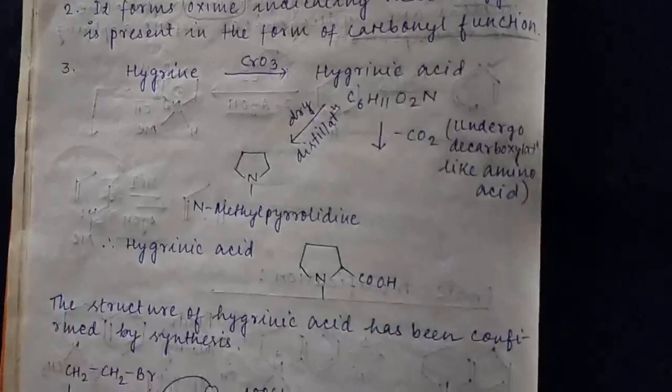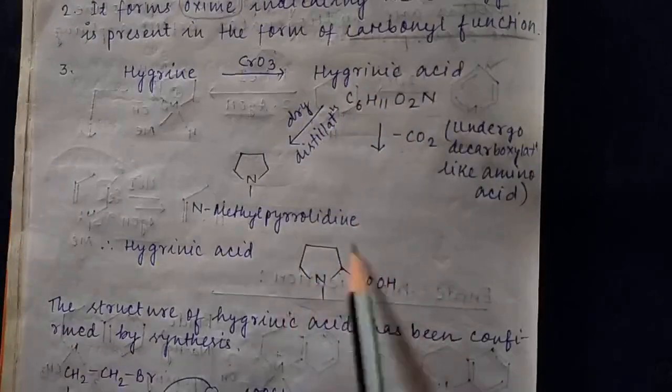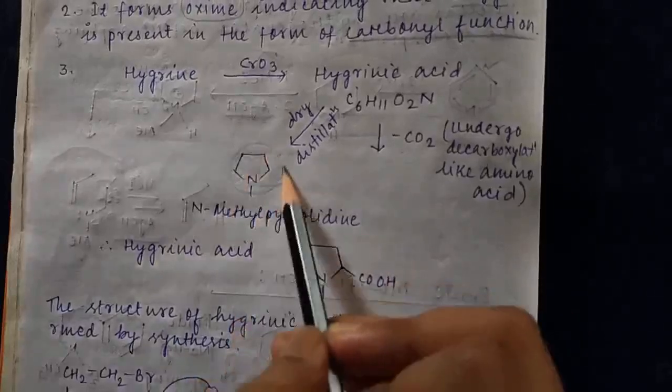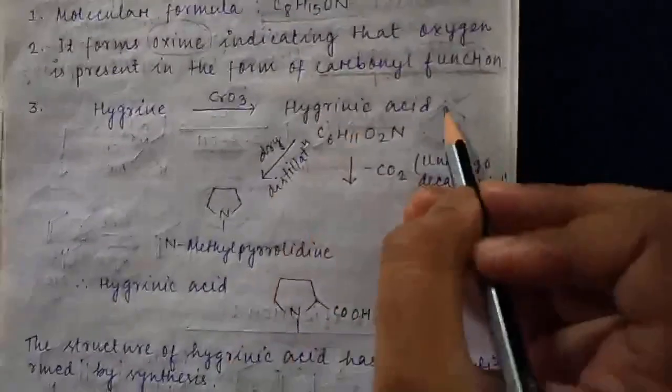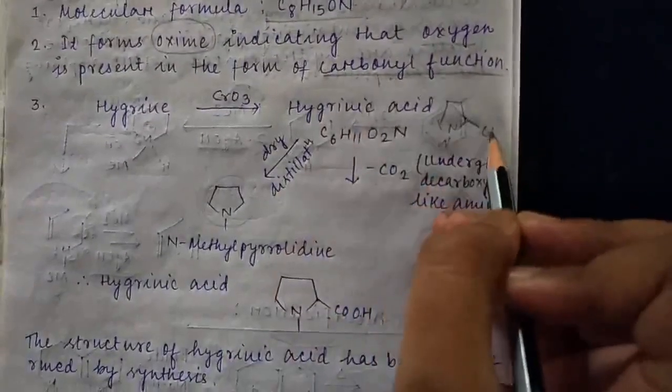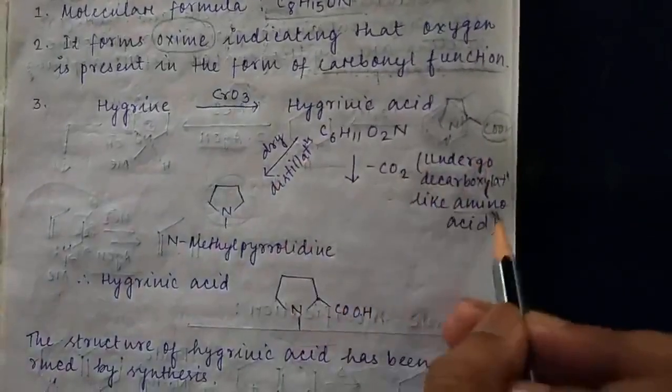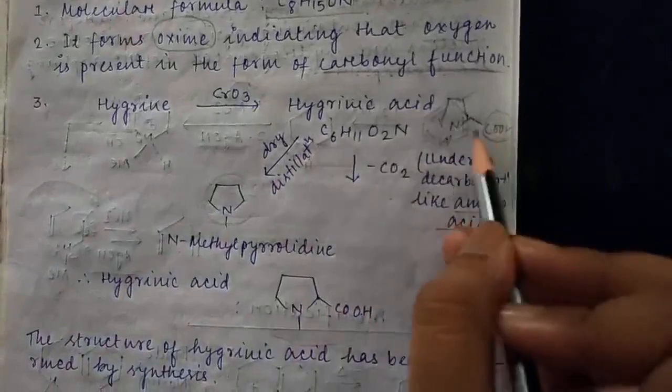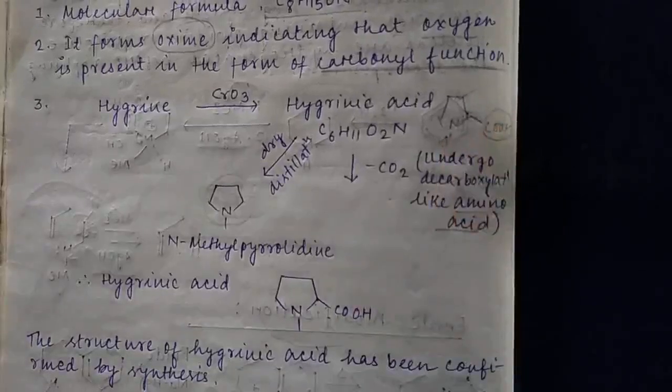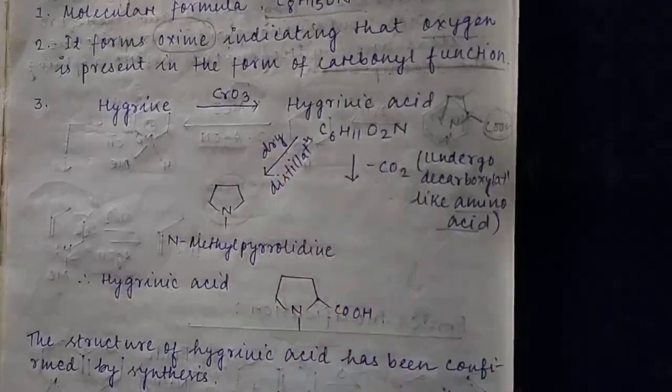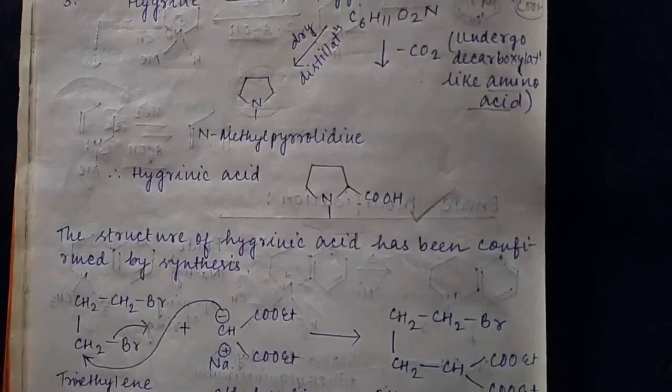From these two pieces of information, we can assign the structure of hygrinic acid. Since N-methylpyrrolidine is formed by dry distillation when CO2 is removed, the skeleton must have N-methylpyrrolidine with COOH in the adjacent position. This COOH is lost during dry distillation and decarboxylation. Since it behaves as an amino acid, N and COOH are attached to N-methylpyrrolidine. So the structure of hygrinic acid is assigned.